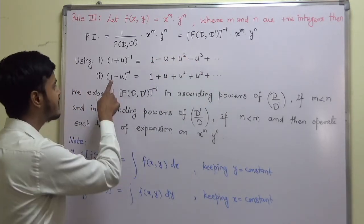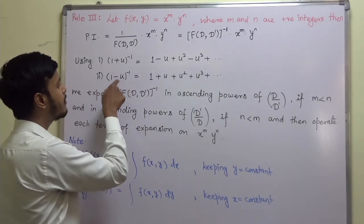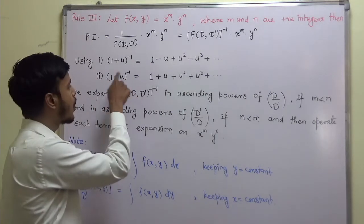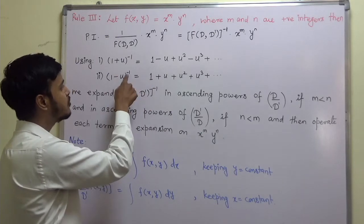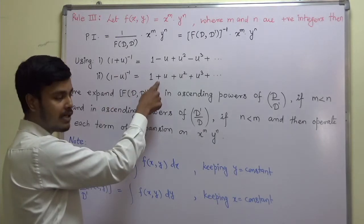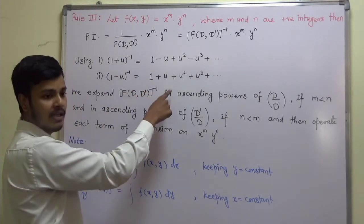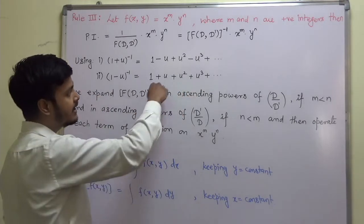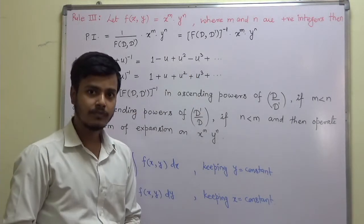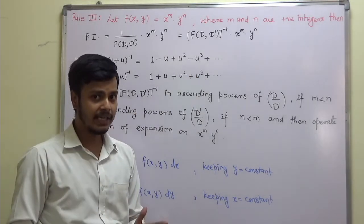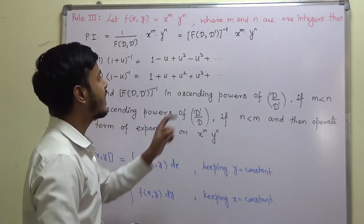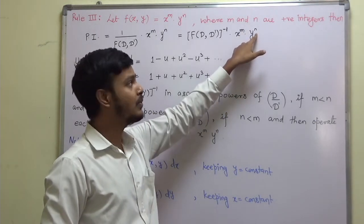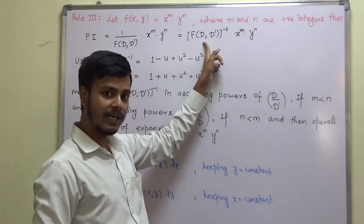Likewise, in this formula, if it is like (1 - u)^(-1), what should it be? 1 minus into minus plus u, and then all the terms will be plus in the ascending powers of u. Now, depending on the value of m and n, we have to expand this.